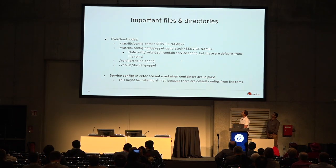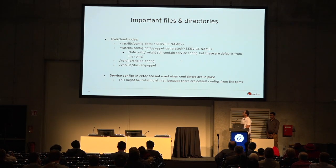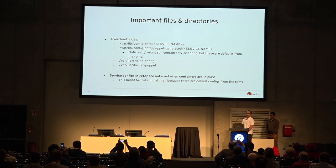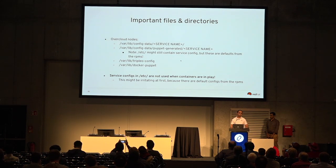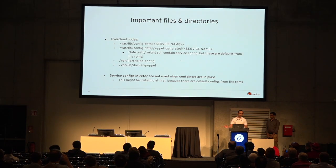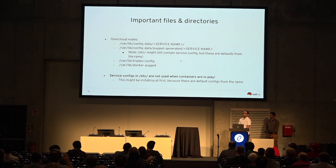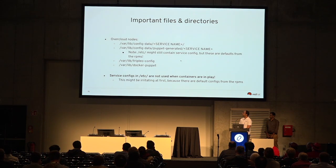Some important directories: varlib config data with service names, which have a full copy of the container tree including etc and all services inside it. We have varlib config data Puppet generated, which has configuration files only that are modified by Puppet. And then we have varlib TripleO config and Docker Puppet, which is managed by Docker.